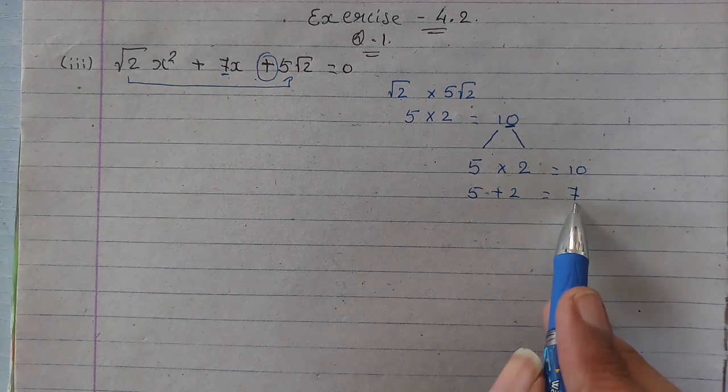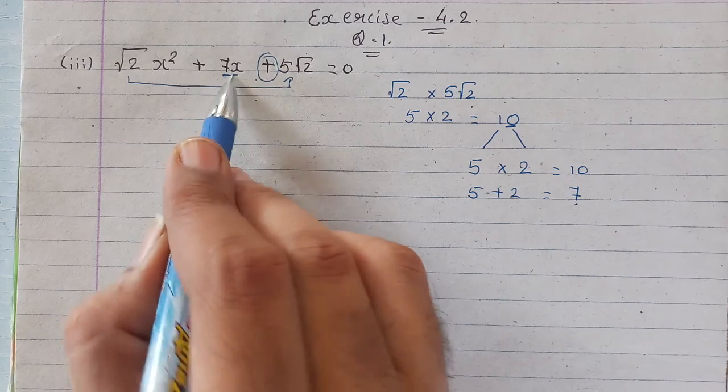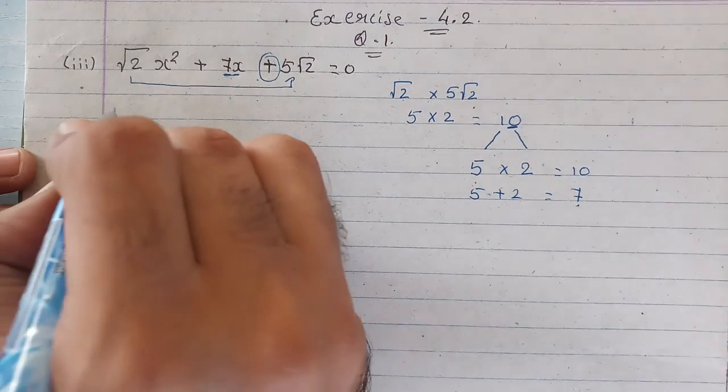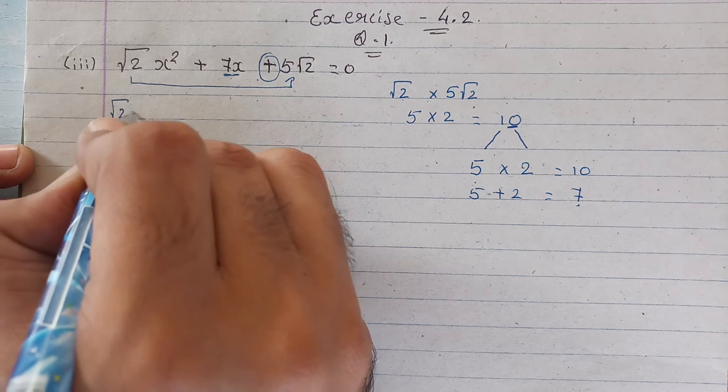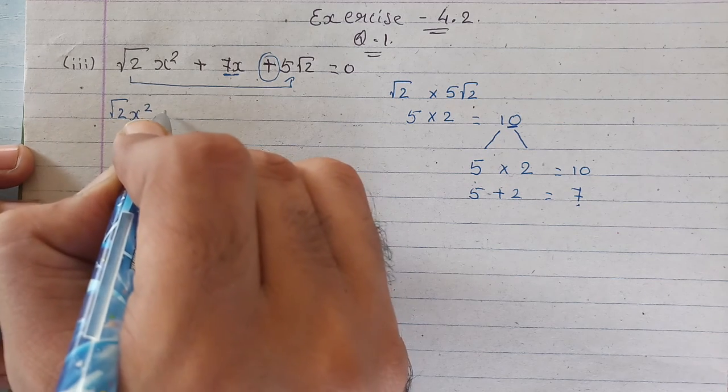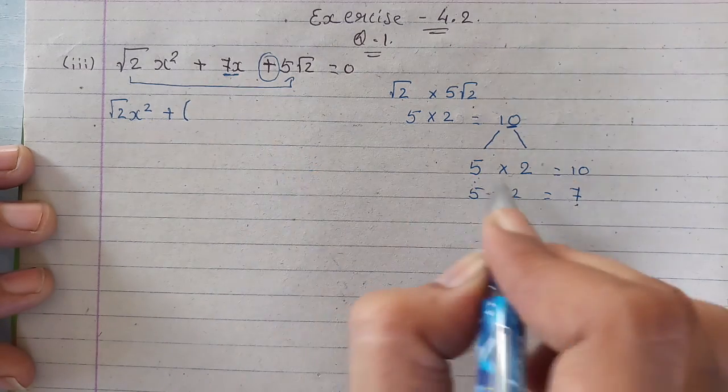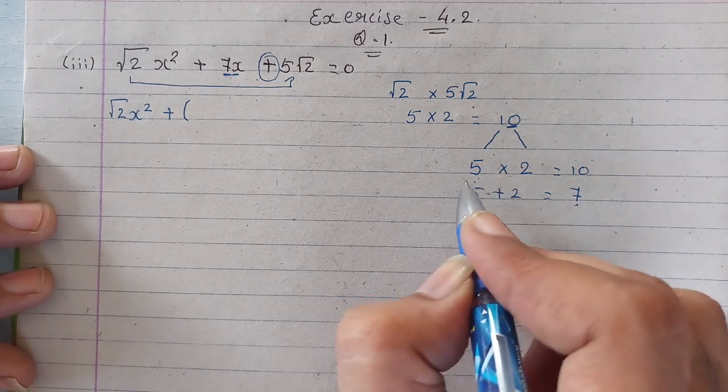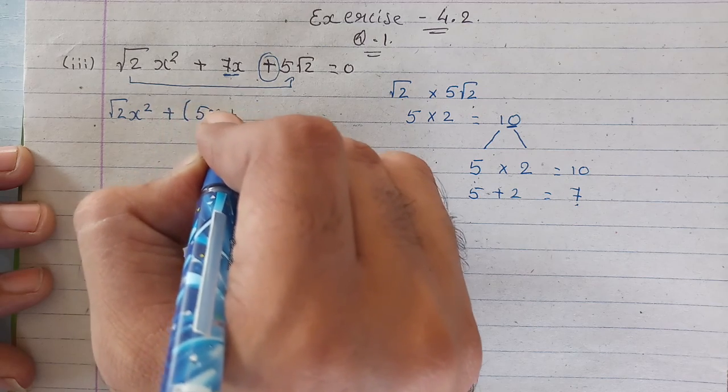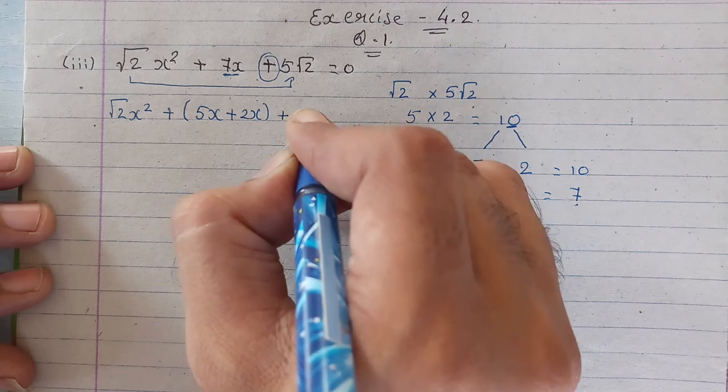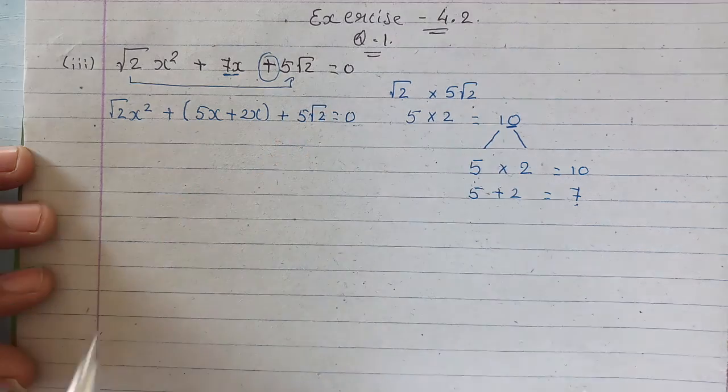Now, what do we do with this 7? We need to put 5x and 2x in place of this 7x. Let's do it. First term root 2 x square will remain as it is. Then there's a plus sign. Now make a bracket: 5x plus 2x, because we need addition to get 7. So it will be 5x plus 2x plus 5 root 2 equals 0.